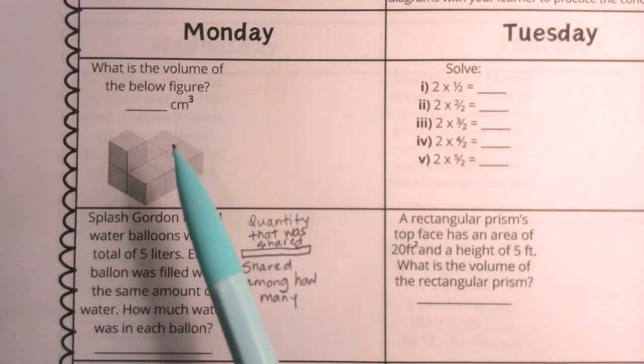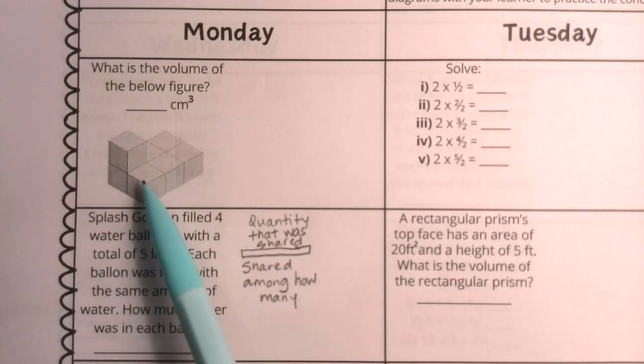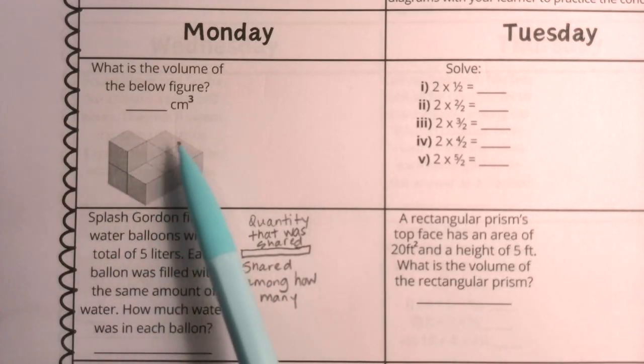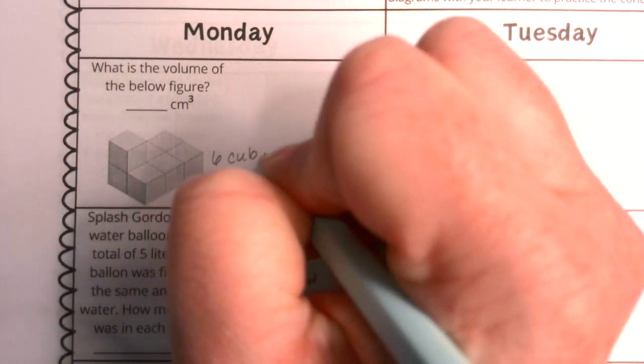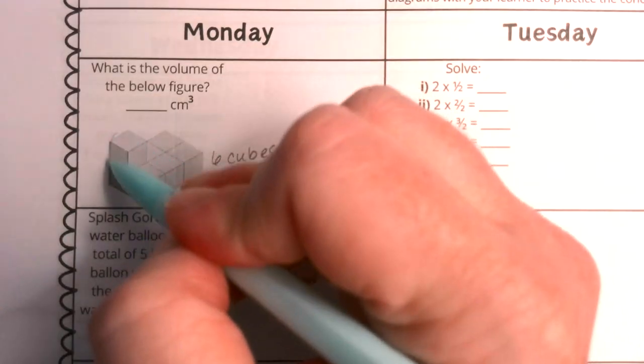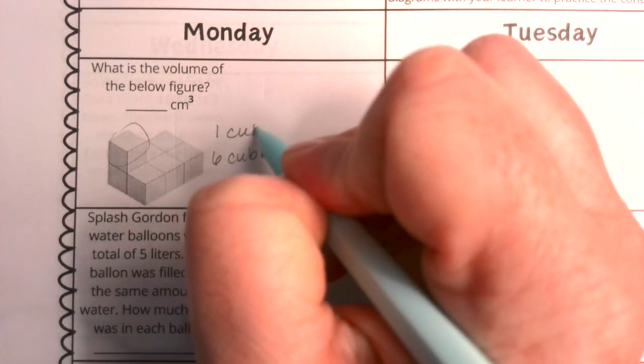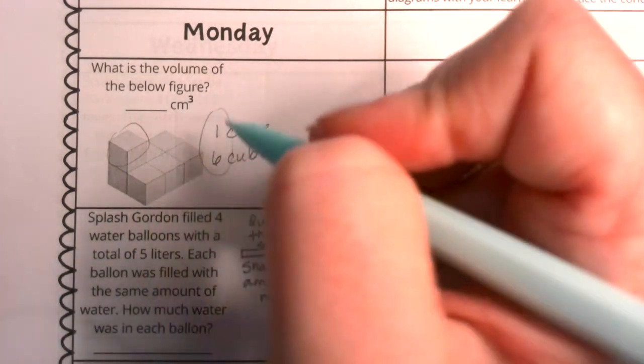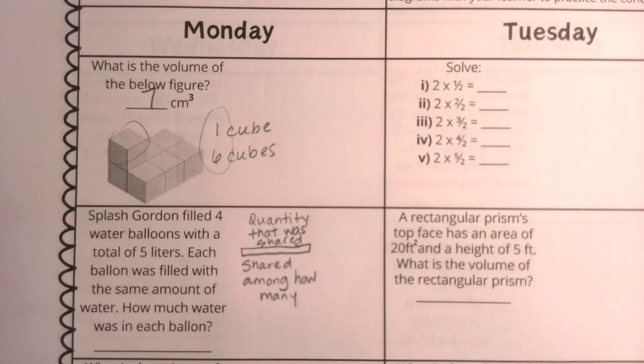This little shape is interesting. I see a bottom layer that's continuous, and I can pretty easily see that the bottom layer is built of six cubes. Then there's one alone little cube sitting in the top layer. Together, that's going to give me seven cubes, which I can report as seven centimeters cubed. That's our first question.